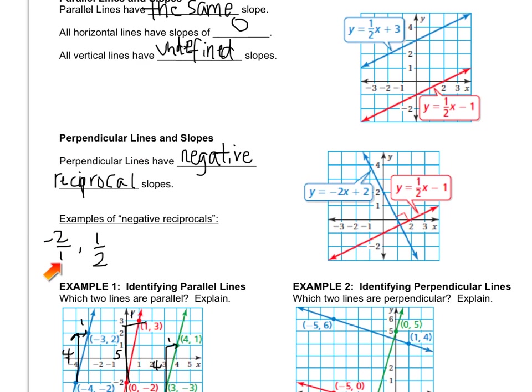And then reciprocal, as you should know from earlier math courses, is when you flip the fraction. So two over one would flip to one half. So it changes its sign and flips. And that's a negative reciprocal.